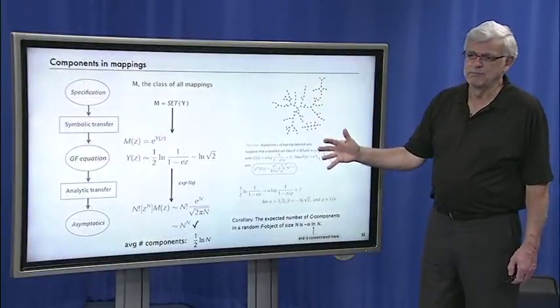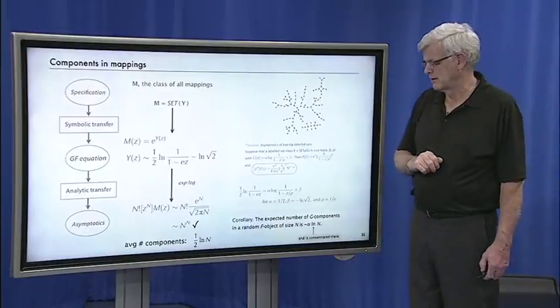Components come for free because we have the corollary to X^log saying that if you have an X^log setup, the number of components is alpha·log n. And we had alpha equals a half. So average number of components in a random mapping is ½log n. Again, that comes immediately through by the same process that we use for a simple problem like permutations.